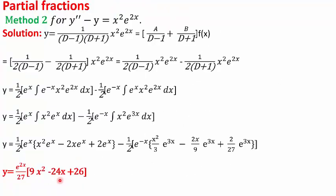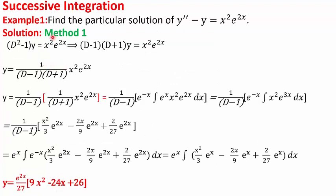One last point: in the first example using successive integration, the right choice of order reduces the number of steps. We applied 1/(D+1) first because that brought e^(-x) outside, which reduced e^(3x) to e^(2x) after integration and multiplication — making the next integration simpler. So choosing the right factor to apply first helps you work with fewer steps.